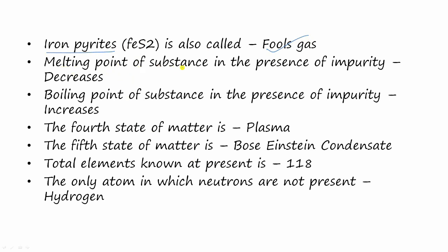The melting point of a substance in the presence of impurity decreases, whereas the boiling point of a substance in the presence of impurity increases. The fourth state of matter is plasma and the fifth state of matter is Bose-Einstein condensate.